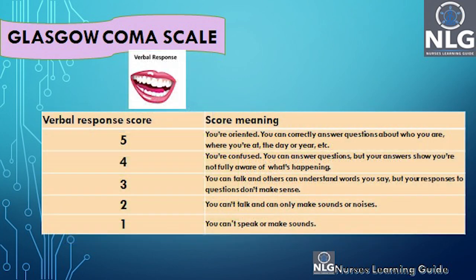After eye movement, we assess verbal response. The highest score for verbal is 5. A score of 1 means the patient cannot speak or make any sound — there is no response at all. If the patient is fully oriented, the score will be 5.